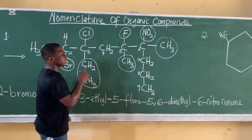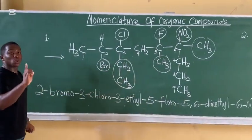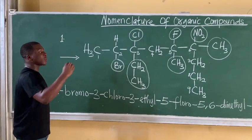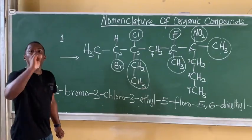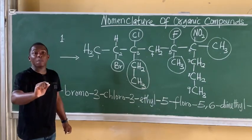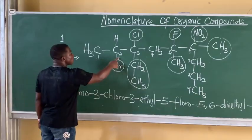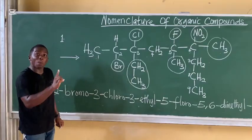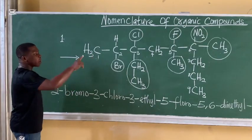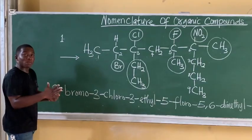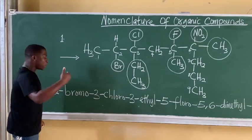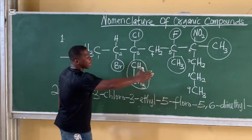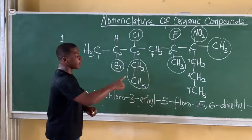So the complete name of this organic compound is: 2-bromo, 3-chloro, 3-ethyl, 5-fluoro, 5,6-dimethyl, 6-nitro, nonane. The first thing to note is to count the continuous longest carbon-to-carbon chain. After counting, you start numbering from the lowest or smallest alphabet. B is the smallest alphabet here, so you count from that direction, then arrange substituents in alphabetical order: B, C, E, F, M, N — then the parent name nonane.